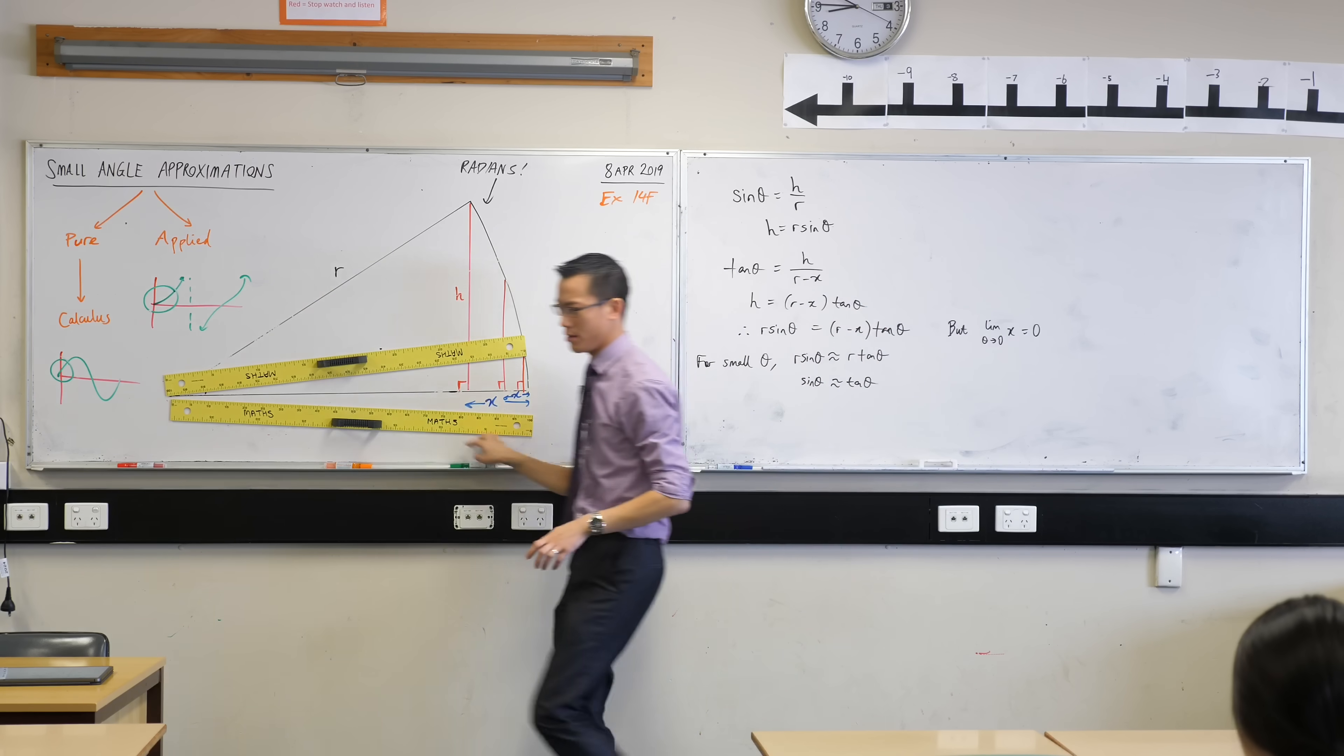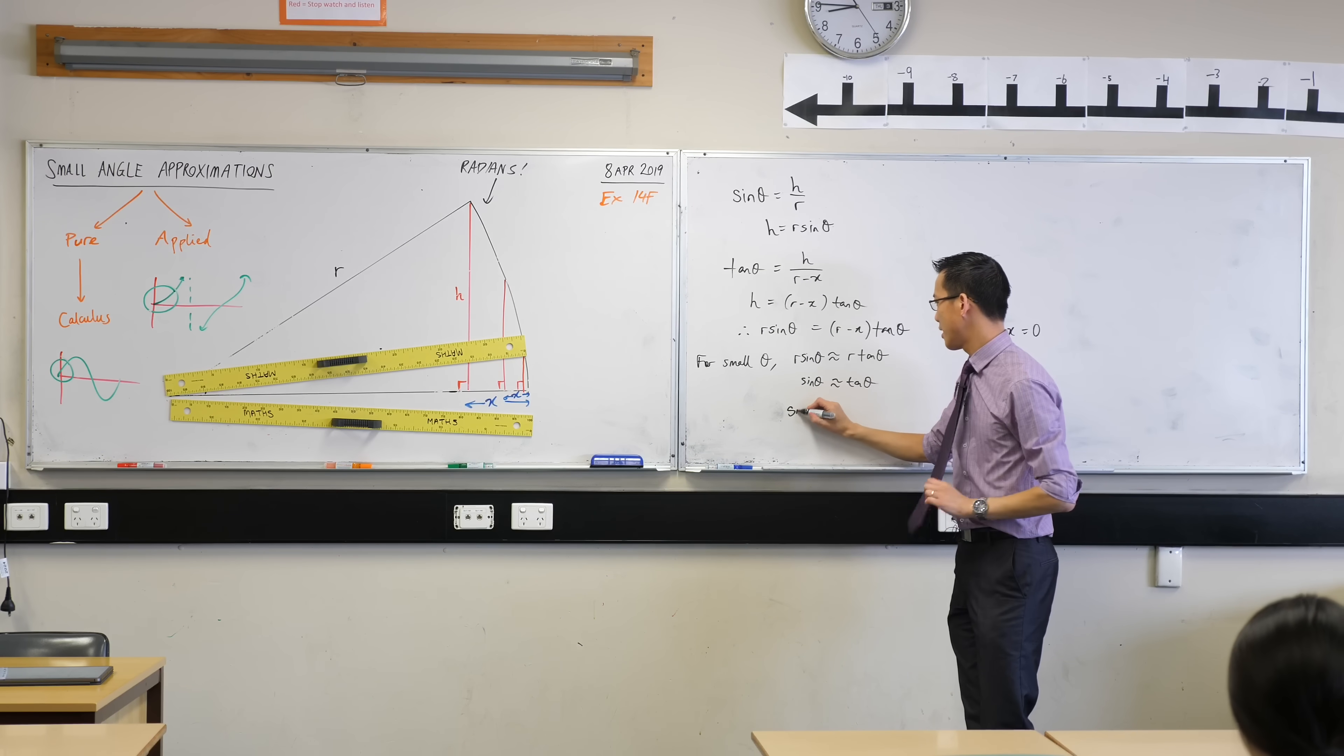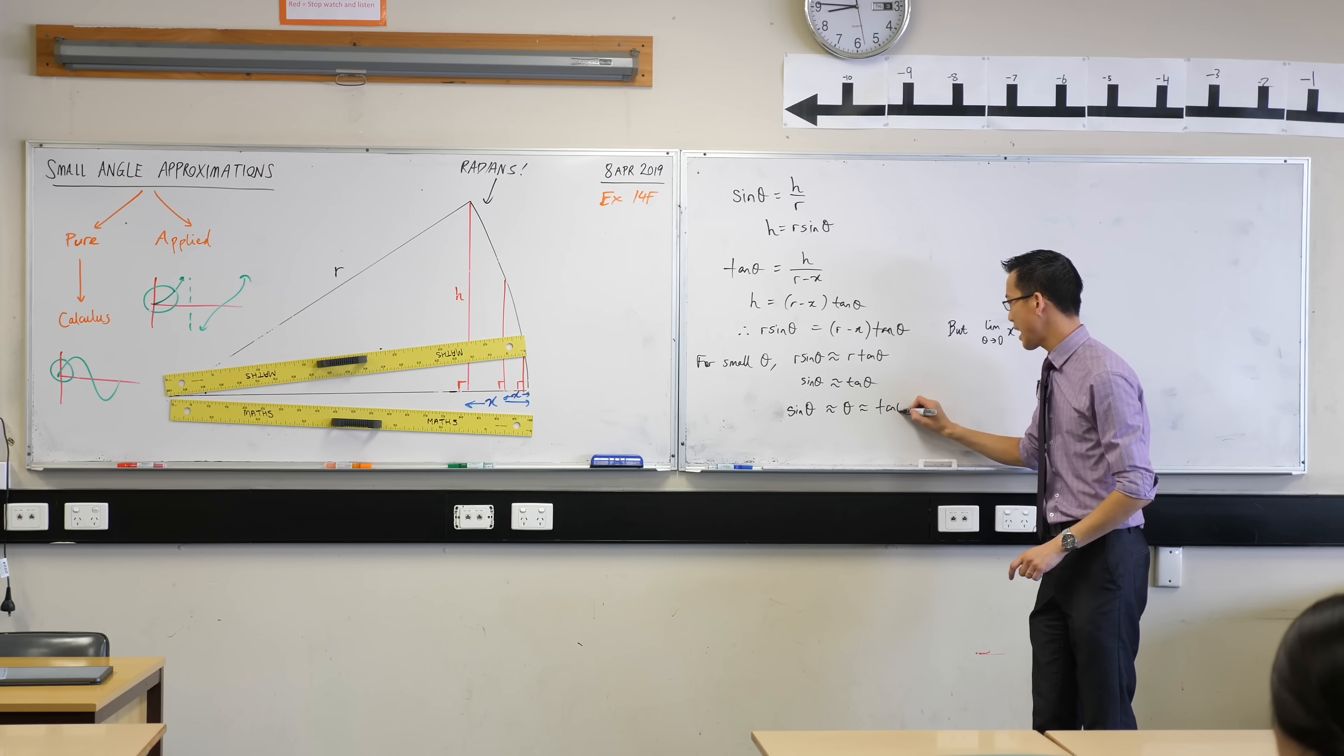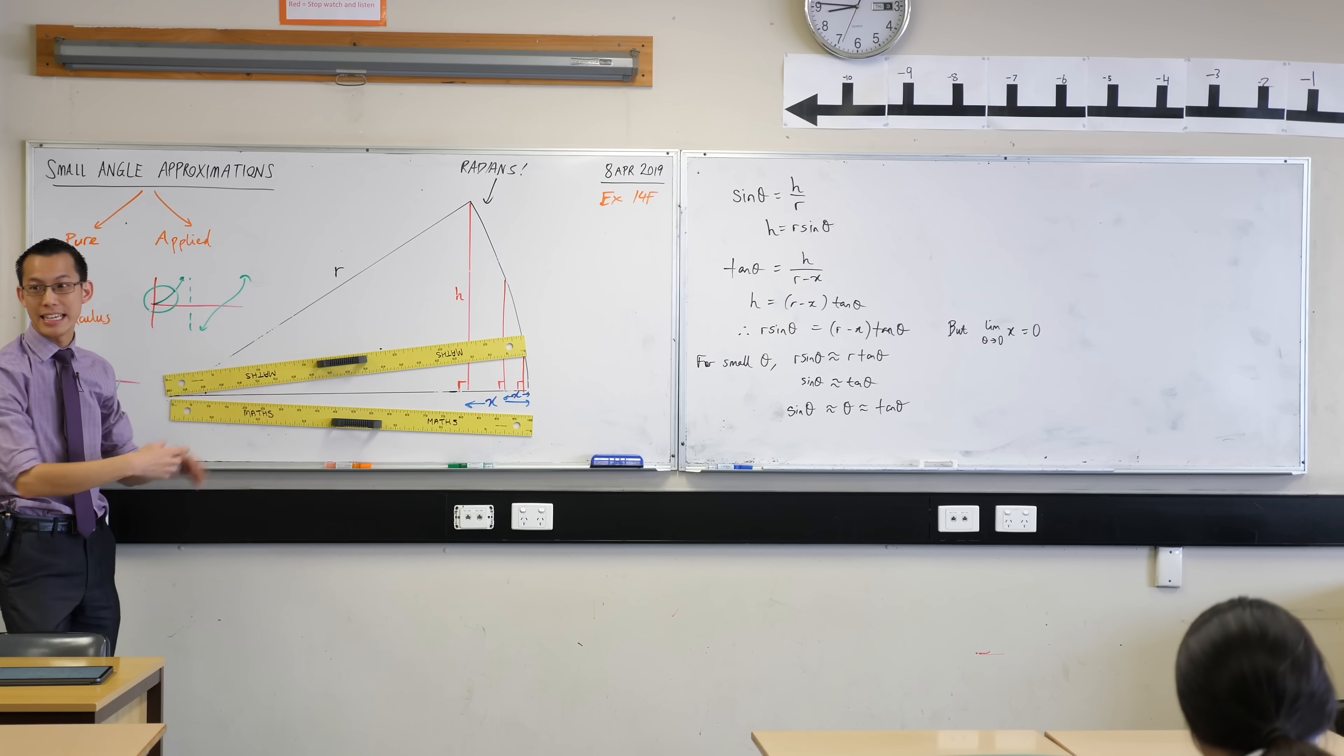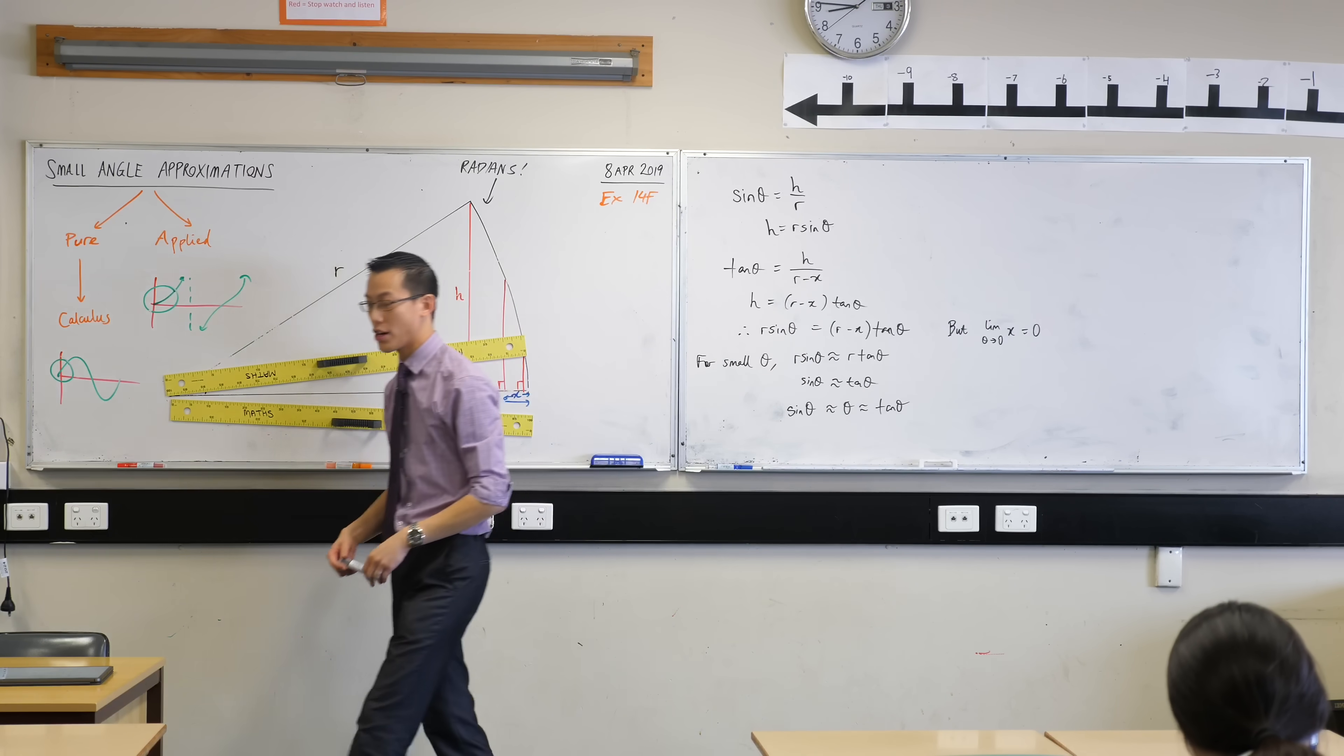So what we can state is, in summary, for small values of theta, sine theta and theta and tan theta are all basically the same thing. This is the small angle approximation after which this entire idea is named. For small angles, we can approximate these things as all basically equal to each other.